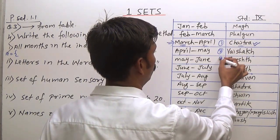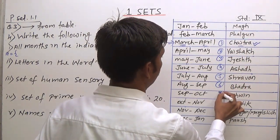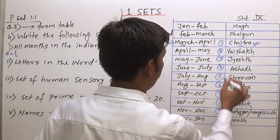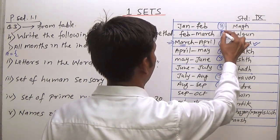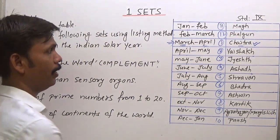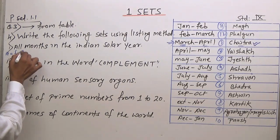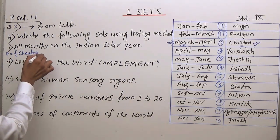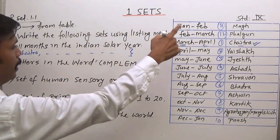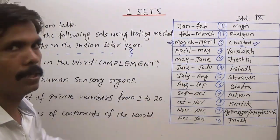Counting all 12 months: 1, 2, 3, 4, 5, 6, 7, 8, 9, 10, 11, 12. That is clear. These are general knowledge items you can write.